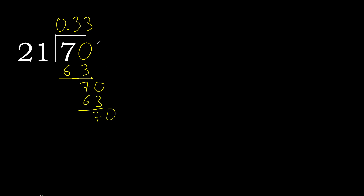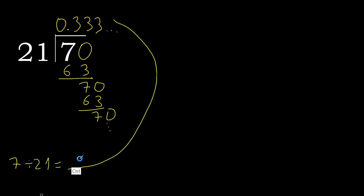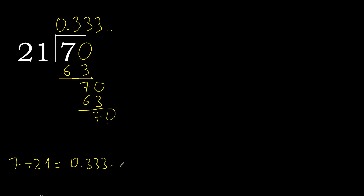This repeats. Therefore, the digit 3 repeats. 7 divided by 21 equals 0.3 repeating — the 3 after the decimal point repeats. So the answer is written like this: 0.333... (3 repeating).